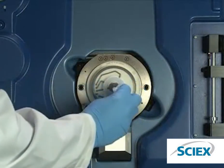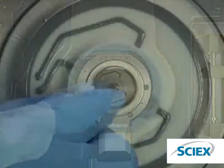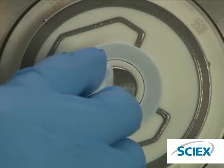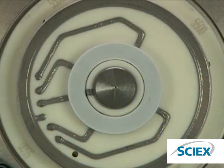Dampen a lint-free wipe with water and wipe the front of the orifice plate. To avoid tissue fibers entering the mass spectrometer, do not rub the wipe over the orifice in the center of the plate. Repeat using the cleaning solution. Wait for the orifice plate to dry.